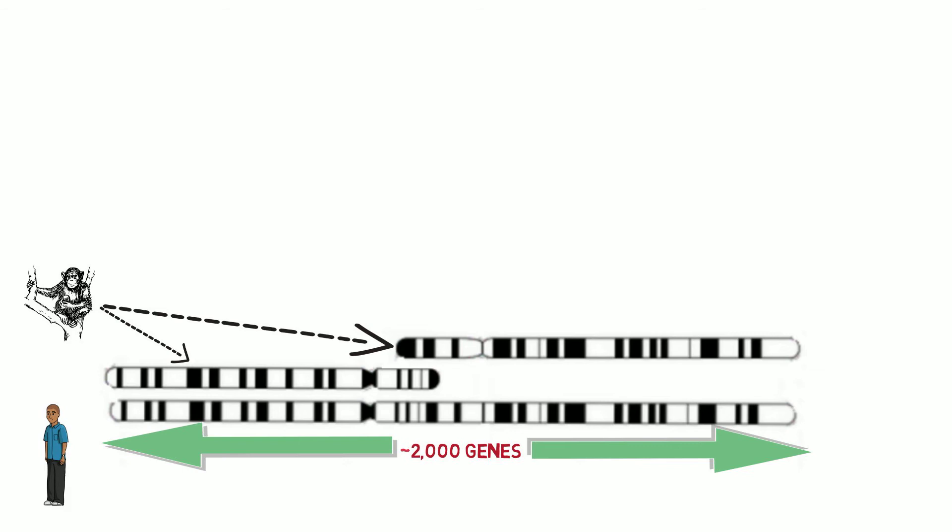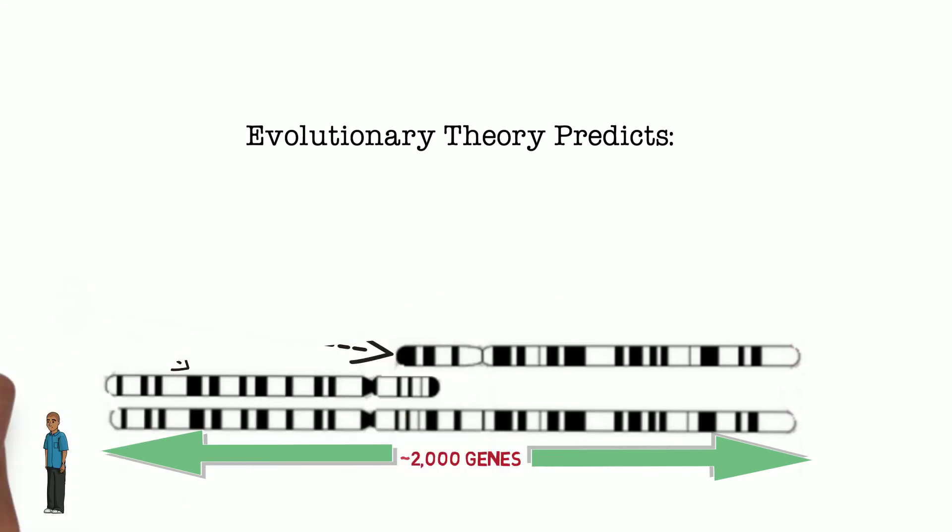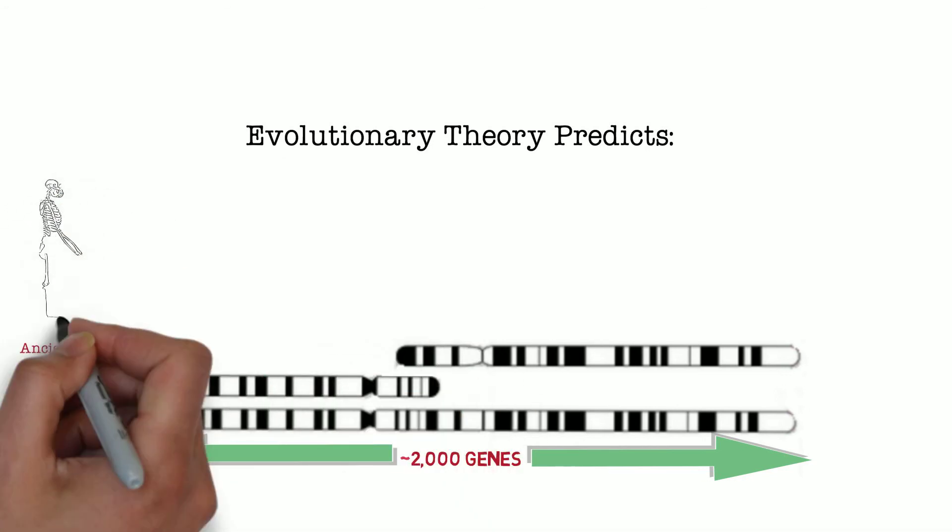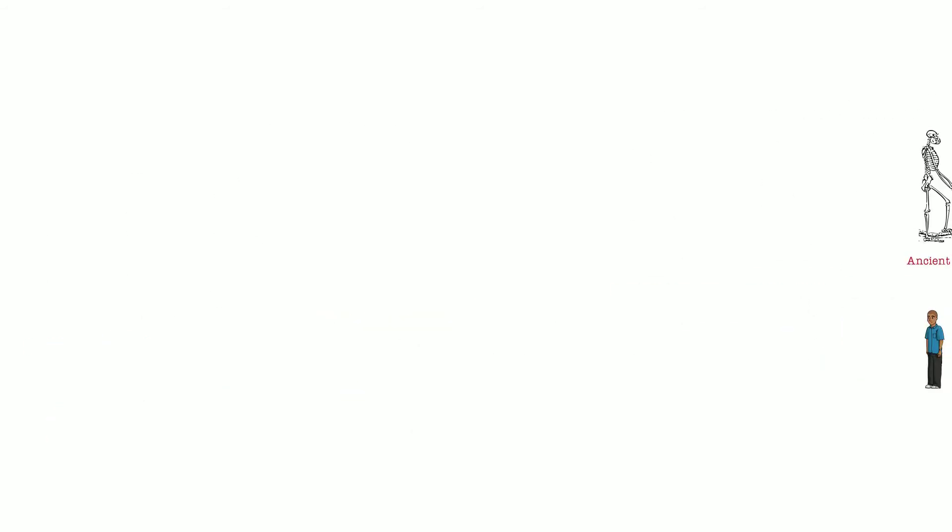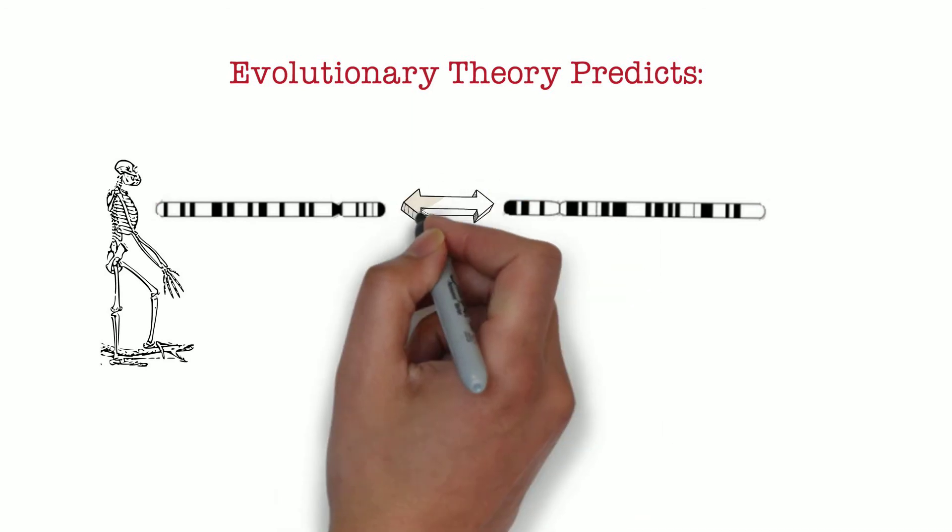Since the two chromosomes of great apes line up so well with one chromosome of humans, evolutionary theory would predict that since we share common ancestors, according to evolutionary theory, with great apes, and we share them in the ancient past, our ancient ancestors also had two chromosomes. At some recent point in our lineage, but not in any of theirs, the two chromosomes became attached. Two separate chromosomes became one.